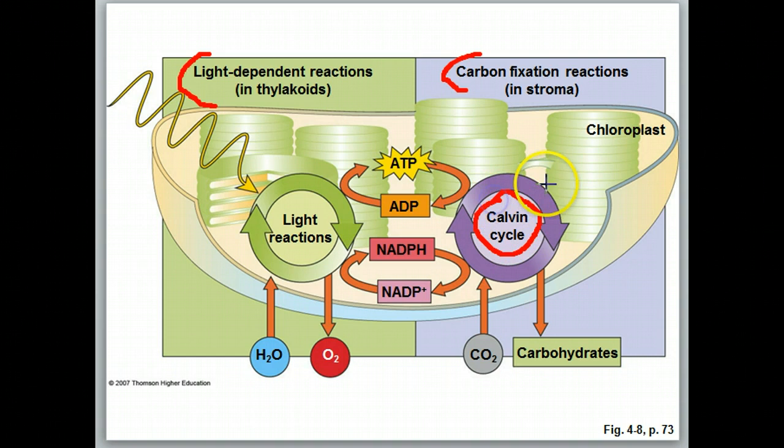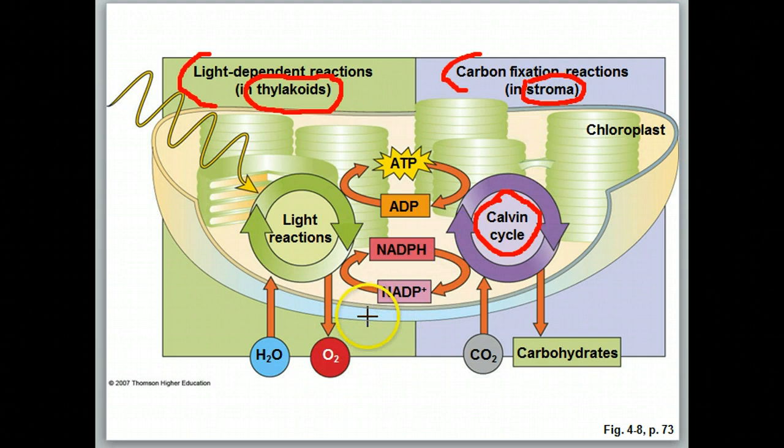Now, where does this occur? The light-dependent reaction occurs in the thylakoid. The thylakoid are these flattened membranes. The Calvin cycle is going to take place here in the stroma. The stroma is a fluid within the chloroplast.